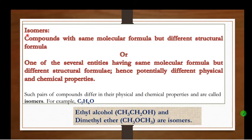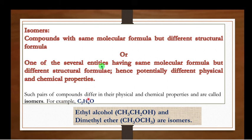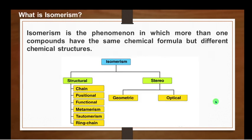What are isomers? Isomers are compounds with the same molecular formula but different structural formula. The compound may have the same empirical formula — for example, C2H6O, which can be either Ethyl Alcohol or Dimethyl Ether. So isomers are one of several entities having the same molecular formula but different structural formula, hence potentially different physical and chemical properties. Such differences in physical and chemical properties of compounds are called stereoisomers.